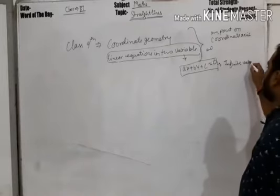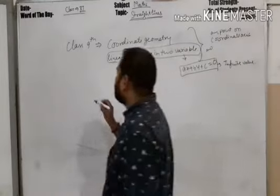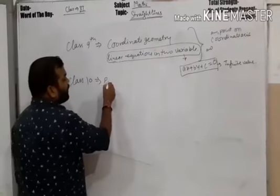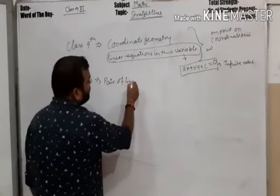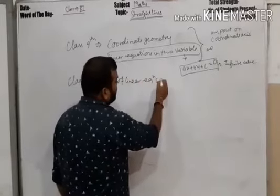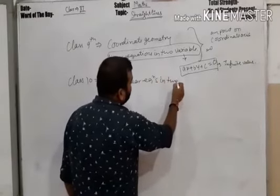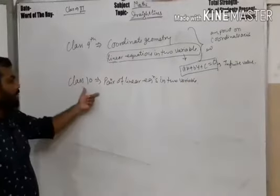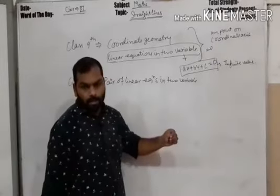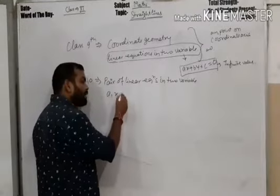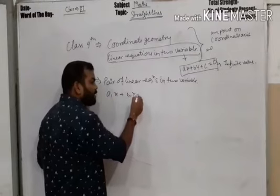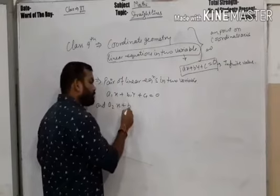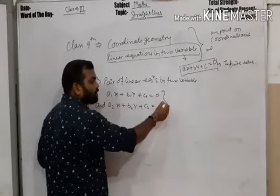Then in Class 10, we studied a pair of linear equations in two variables. We drew pairs of lines — two equations were given: a1x plus b1y plus c1 is equal to zero, and a2x plus b2y plus c2 is equal to zero.